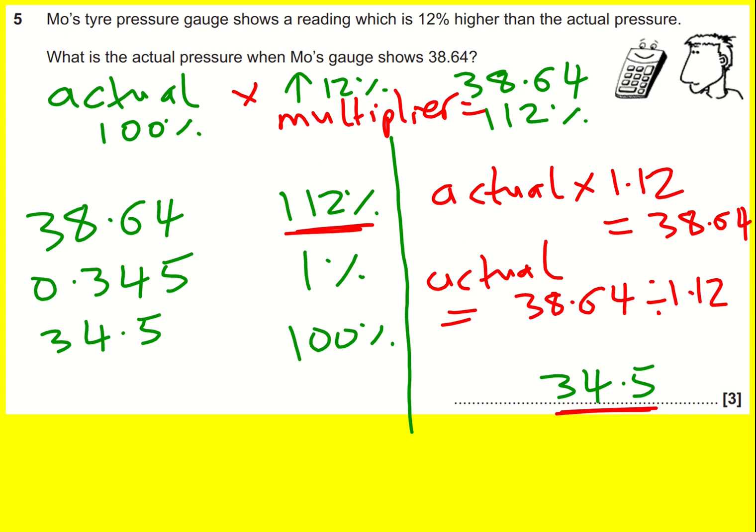Essentially these are the equivalent methods. When we divide by 112 and we times by 100 it's the same as if we just divided by 1.12 to start with. It's a slightly different way of thinking.